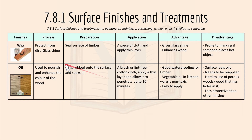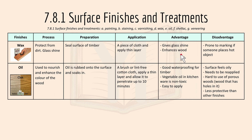Then we have wax and oil. Wax basically protects from dirt and makes the surface glass-shine. You have to seal the surface of the timber before preparation. For application, use a piece of cloth and apply a thin layer. The advantage is that it gives a glass shine and enhances the wood, but the disadvantage is it's prone to marking if someone places a hot object on it.